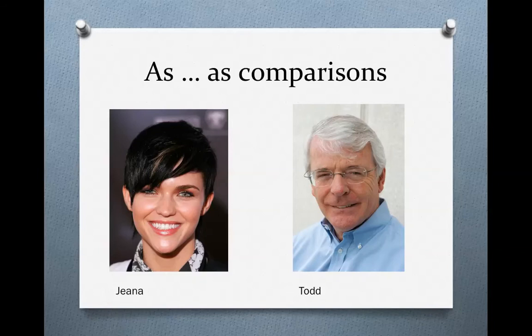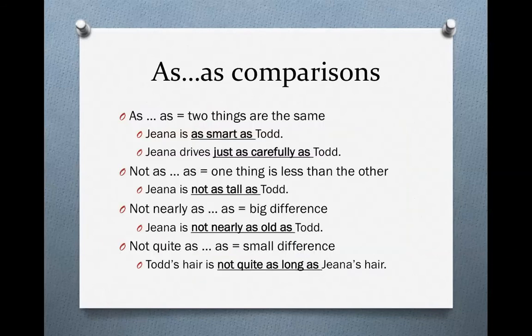For the following sentences that I'm going to read, I'll be talking about Gina, a young woman, and Todd, an older man. Here are Gina and Todd. When you use as-as comparisons, you're comparing two things and saying that those two things are the same. For instance, Gina is as smart as Todd — so Gina is smart and Todd is smart. He doesn't have any more intelligence than her or any less, and she doesn't have any more than him. It is exactly the same. They are both smart.